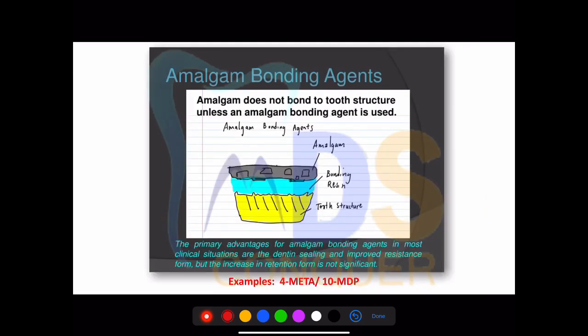Amalgam bonding agents: the bonding between the dental structure and amalgam is mechanical bonding. To improve it, a bonding agent is added that bonds to both the tooth structure and the amalgam. These are called amalgam bonding agents, and the best examples are as shown.